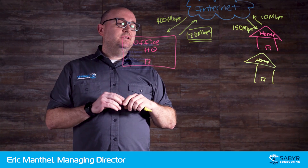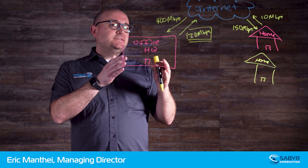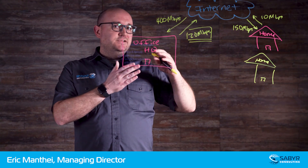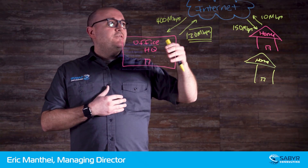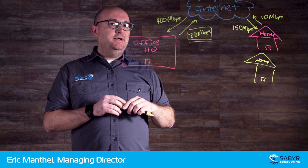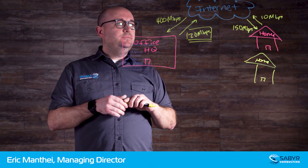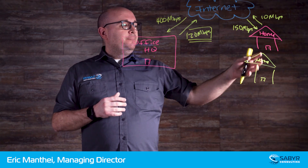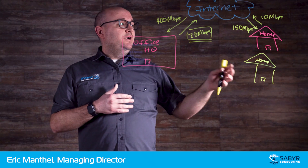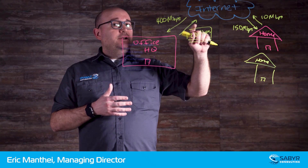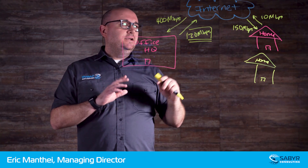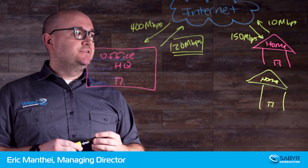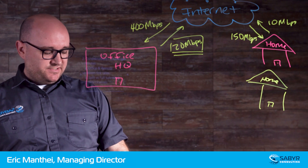There might also be people already at the office, or processes and services that need to push things to the internet as well. Maybe your office backs up data to the cloud — AWS, GCP, or Azure. So if you have a limited uplink and a lot of people working offsite, there can be some real constraints. However, one thing that will help with these constraints is a concept known as split tunneling.